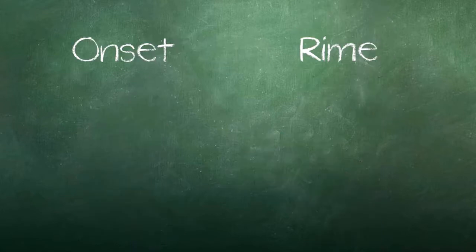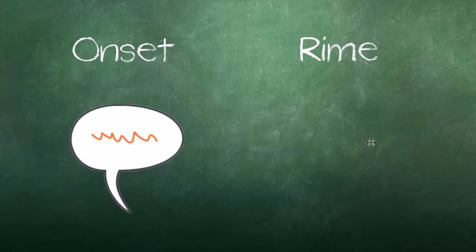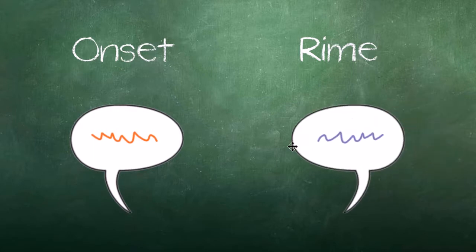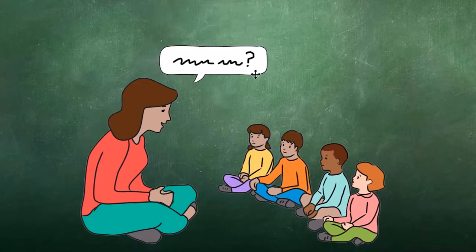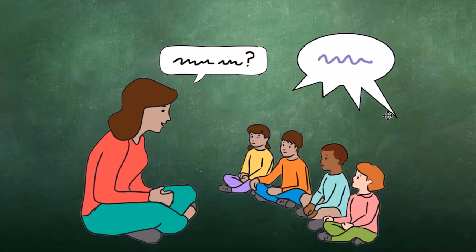Sometimes if students are struggling with generating the rhyming word, I will give them the onset and the rhyme and have them put the parts together. For example, if they can't think of the word lunch, I would say, 'How about... l-unch? What's the word?' And the students would say, 'Lunch!' The rhyming words at the end of the two sentences are bunch and lunch.